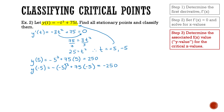So now I have my two critical coordinates: one is positive five comma 250, and the other is negative five comma negative 250. Those are the coordinates. Step three is done and we have found our stationary points.